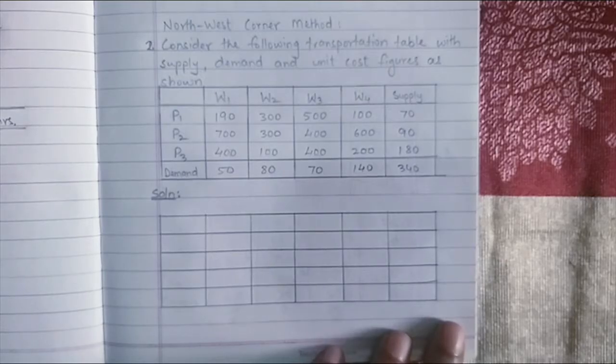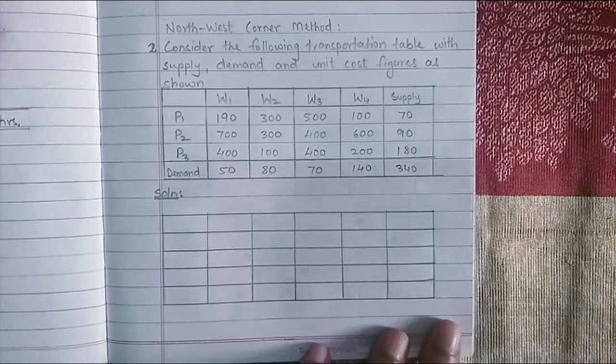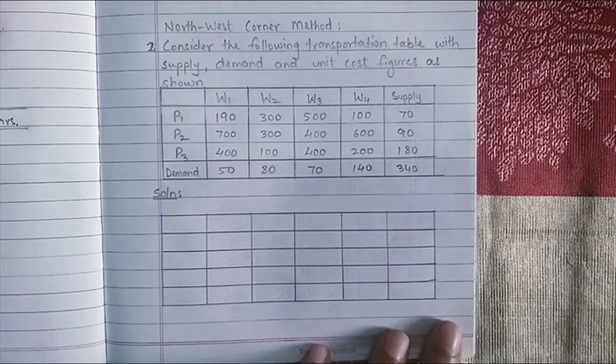Hello and welcome back to my decision science session. Today I will show you the North-West corner method which is used to solve a transportation problem. The method gives you the initial feasible solution for the given problem.